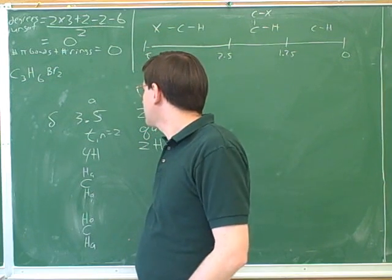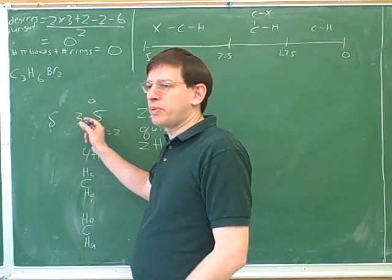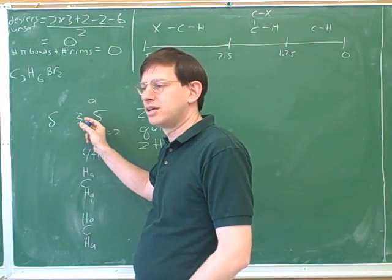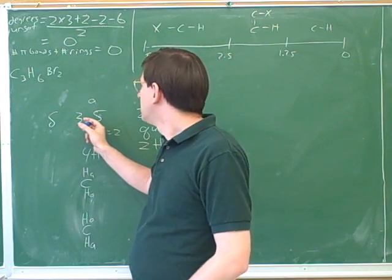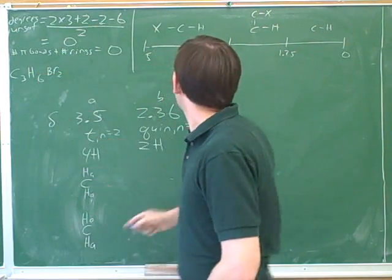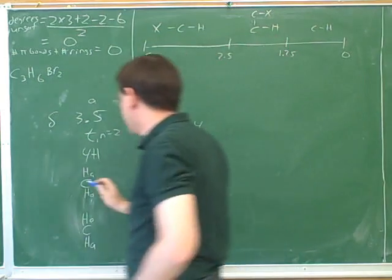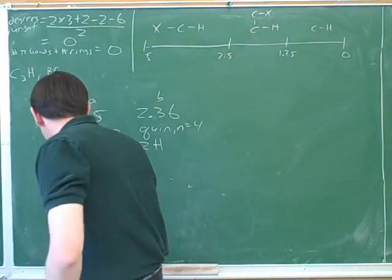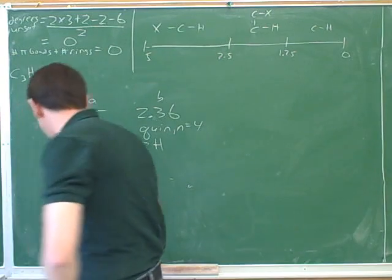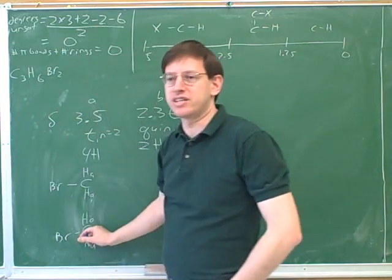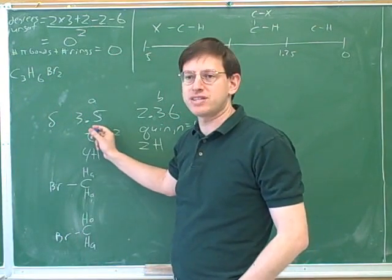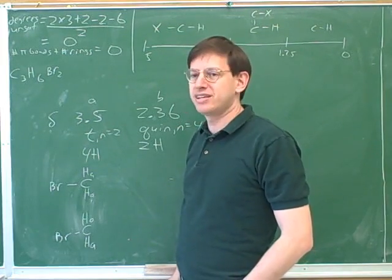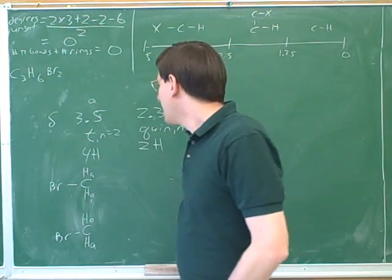Taking a look at this, we also have a signal in the 3.5 region. What does the 3.5 chemical shift seem to indicate? It's connected to an electronegative atom — which we do have. We seem to be in the region where we're connected to bromine. And therefore I'm going to put a bromine here as well, because these groups have to be identical — otherwise they wouldn't give the same peak. Do we have enough bromines? Yes, we have two bromines.